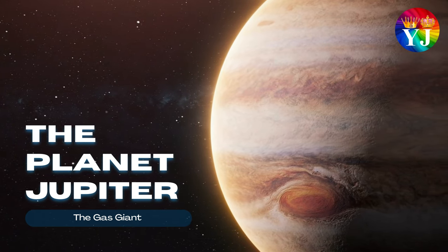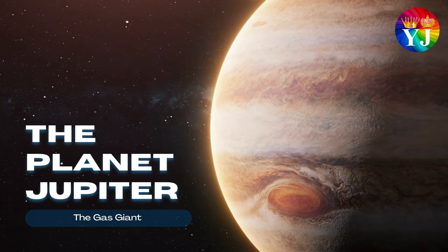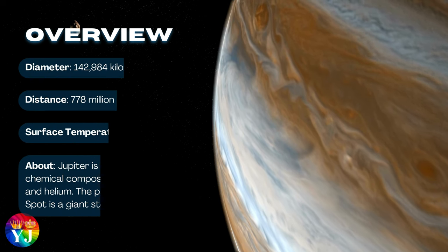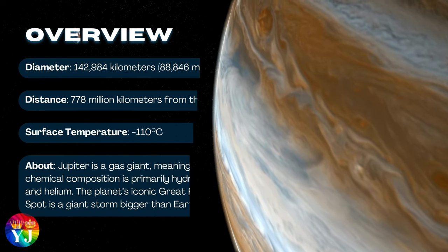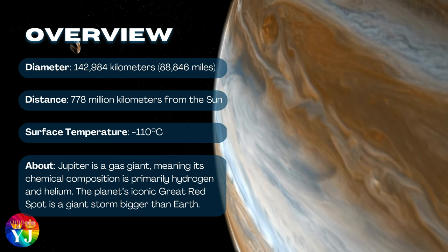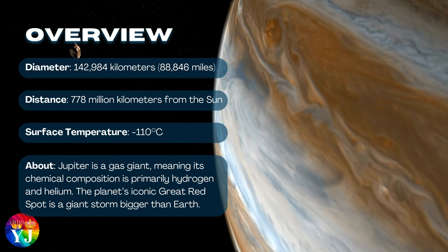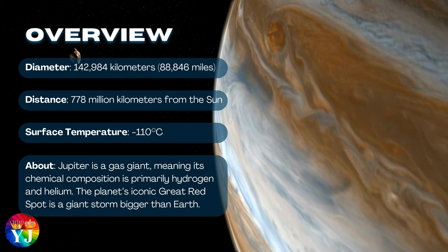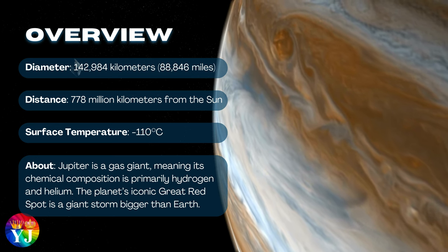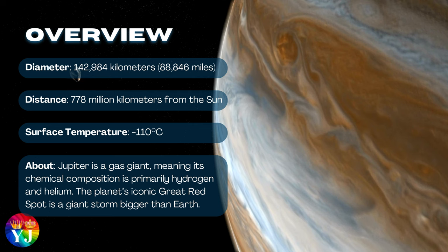The planet Jupiter, the gas giant. Overview of Jupiter: Diameter 142,984 kilometers, Distance 778 million kilometers from the Sun, Surface temperature minus 110 degrees Celsius. About Jupiter: Jupiter is a gas giant, meaning its chemical composition is primarily hydrogen and helium.